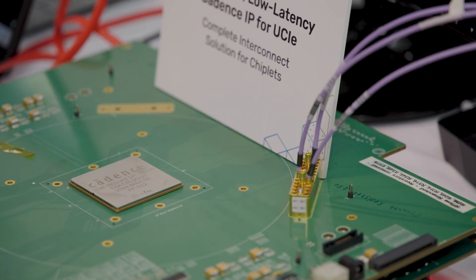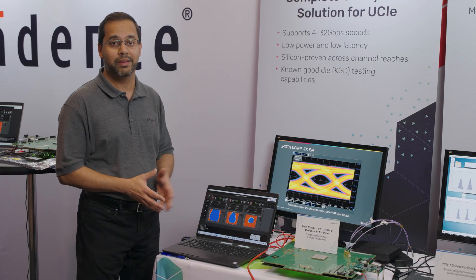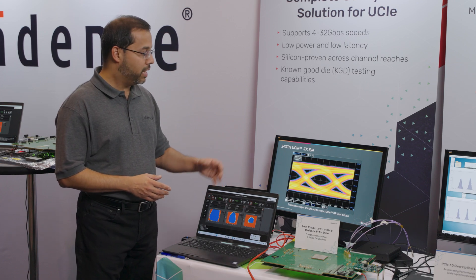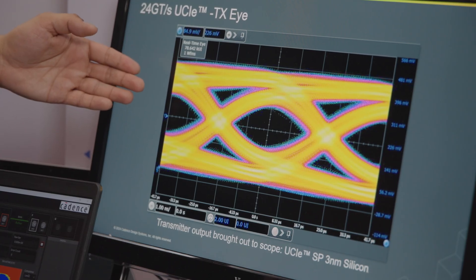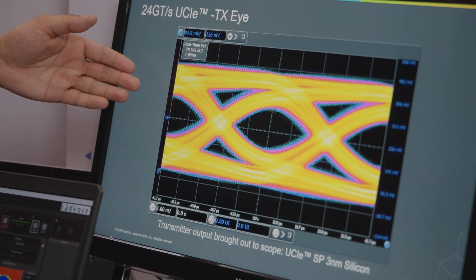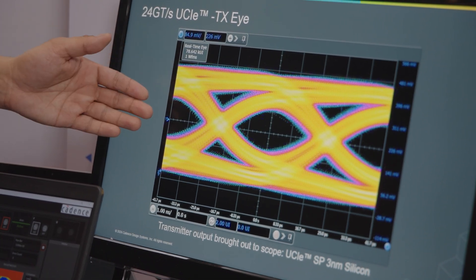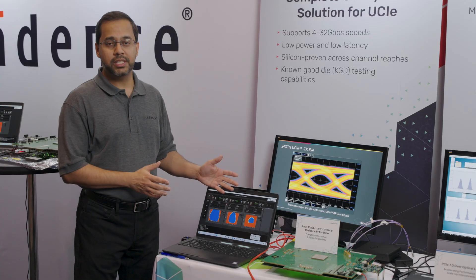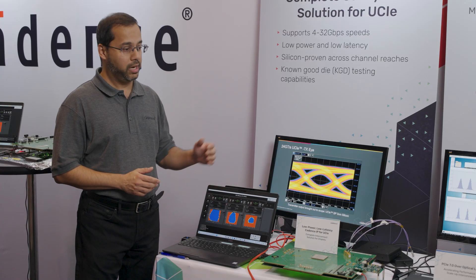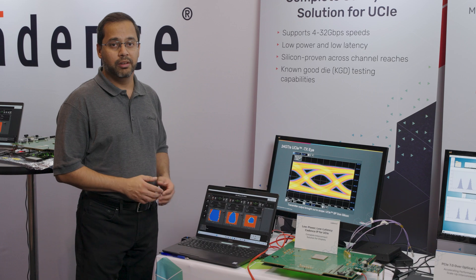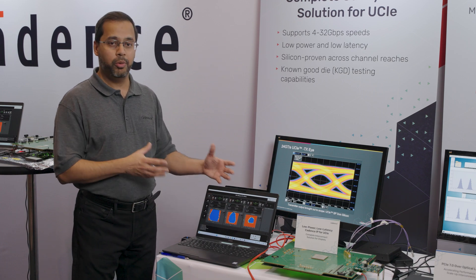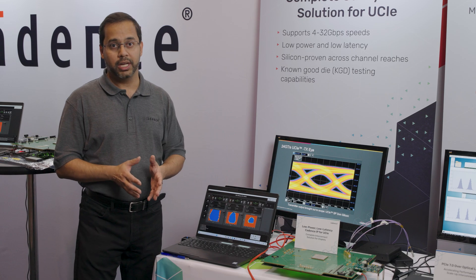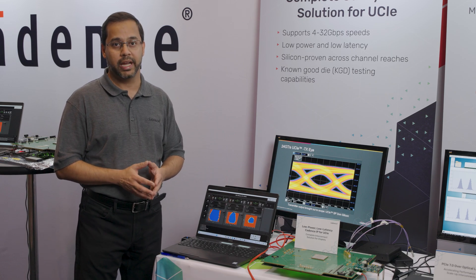This is a very busy area and we simply don't have the space for an oscilloscope, so we have made that measurement and shown it here on the screen. You can see how a transmit eye looks when exported out to an oscilloscope at 24 giga toggles per second. With both an advanced package solution and a standard package solution across various lengths, we have full coverage to support your UCI needs in all market spaces. Thanks for watching, and for more information please visit Cadence.com.